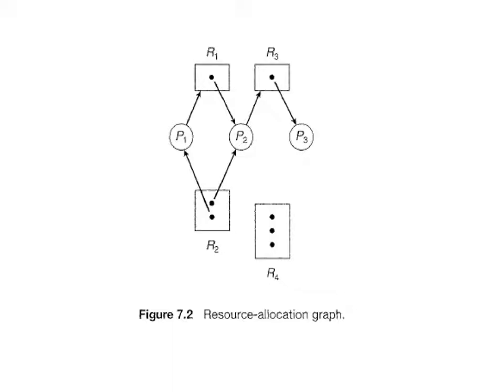A directed edge from process P to resource type R, denoted P → R, signifies that process P has requested an instance of resource type R and is currently waiting for that resource. A directed edge from resource type R to process P, denoted R → P, signifies that an instance of resource type R has been allocated to process P. The edge P → R is called a request edge, and the edge R → P is called an assignment edge.